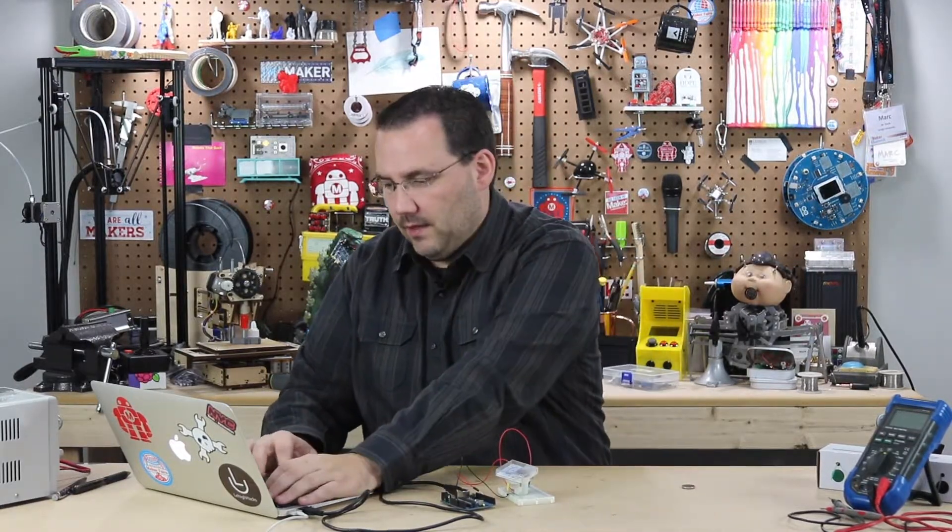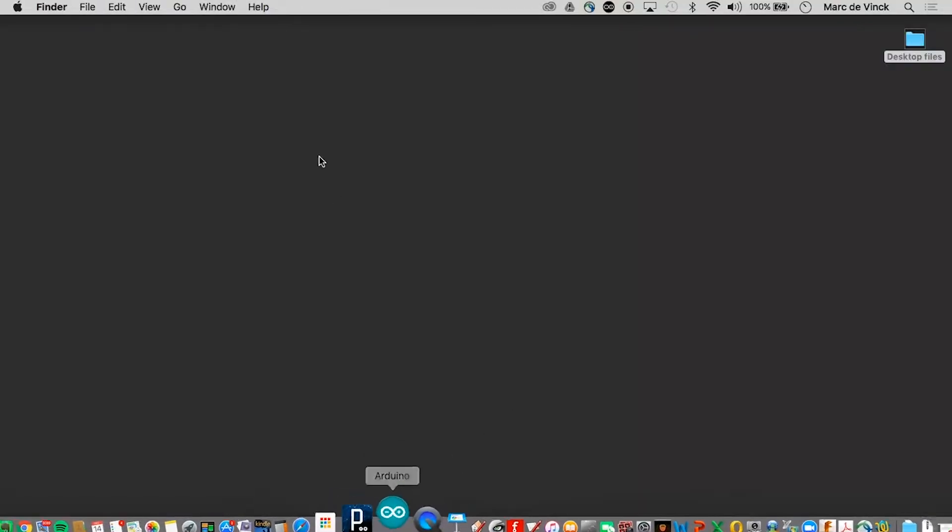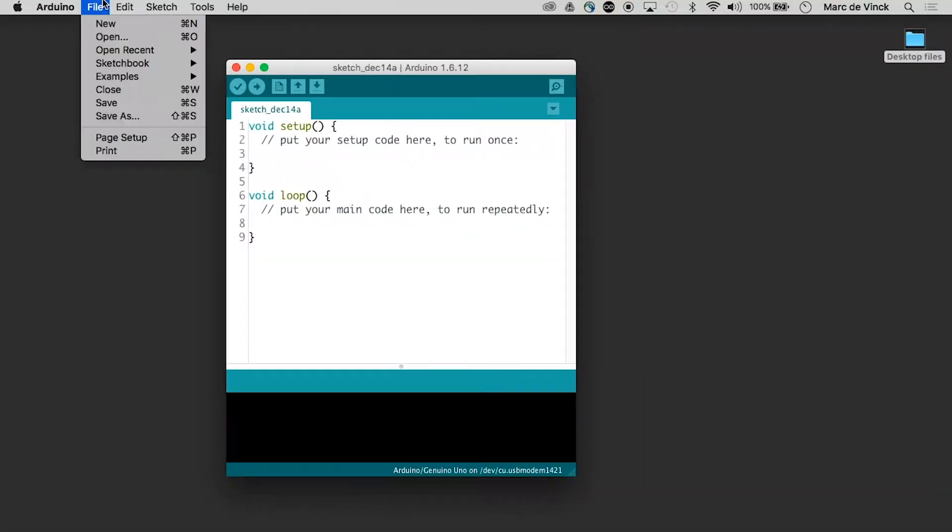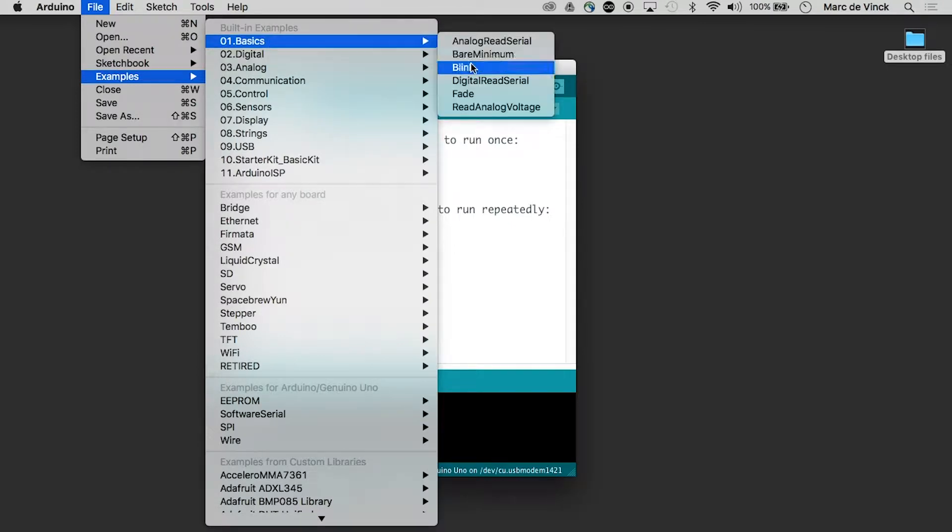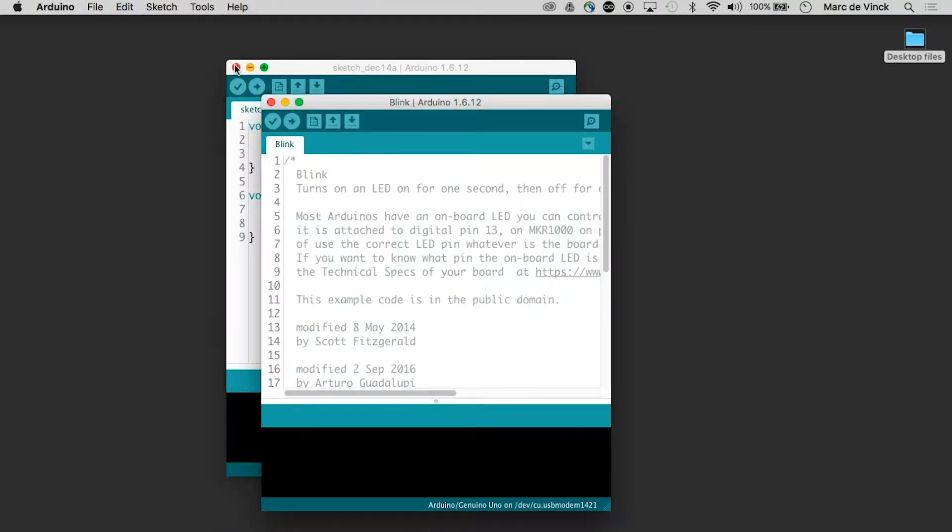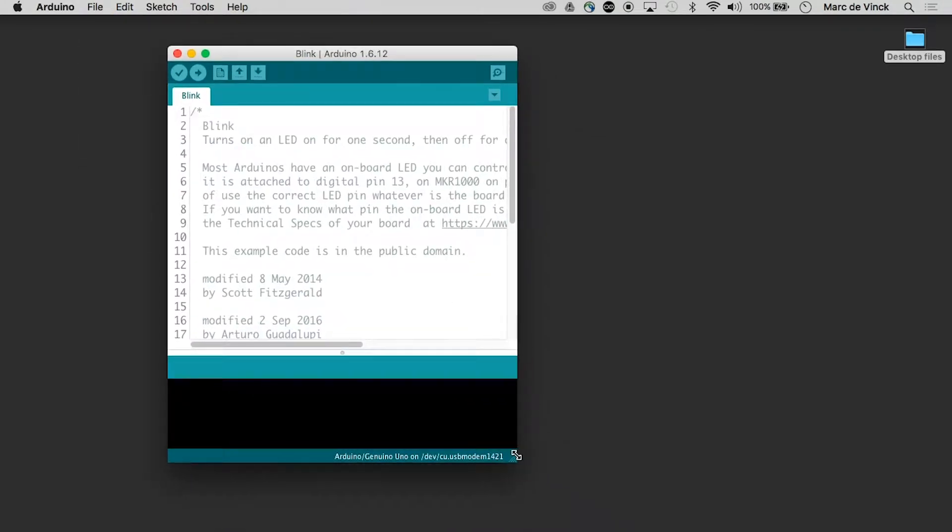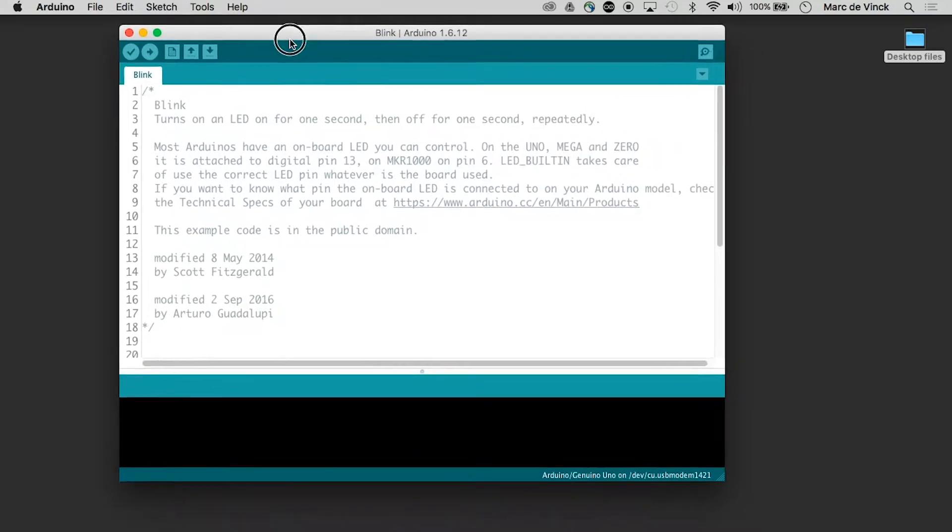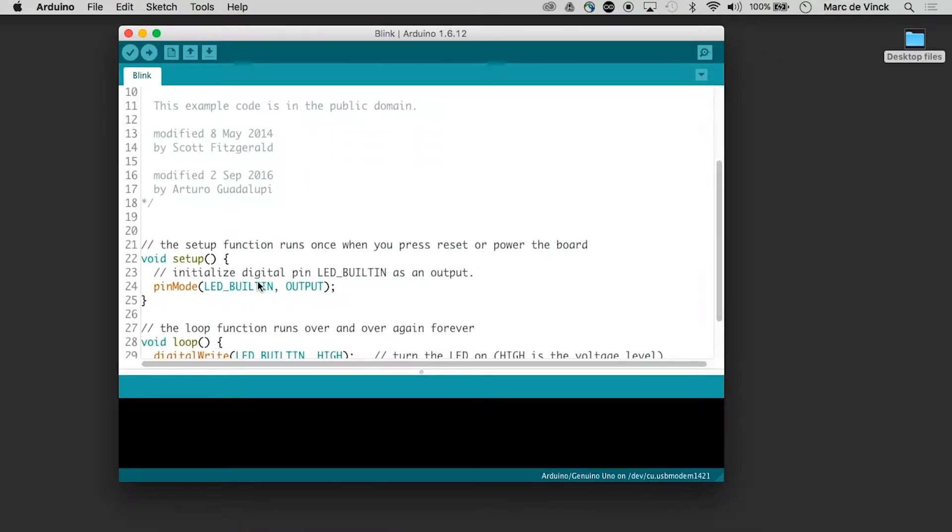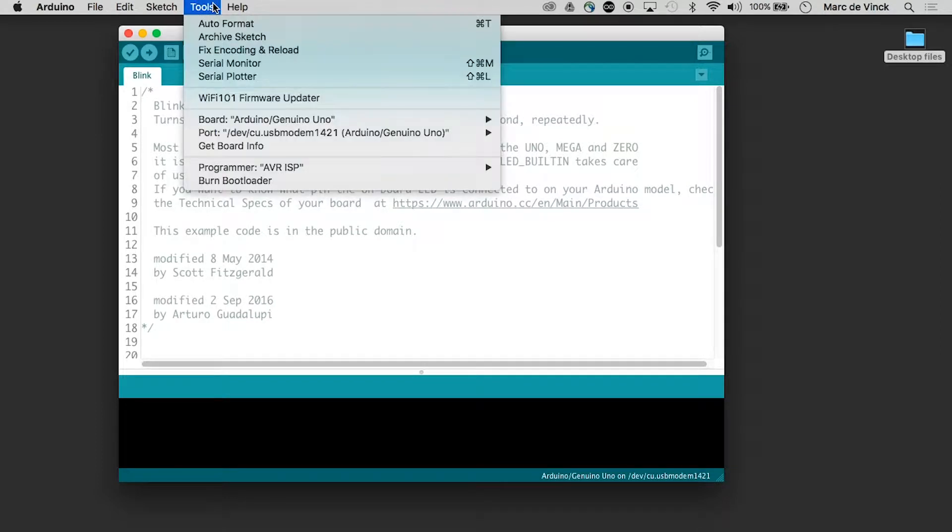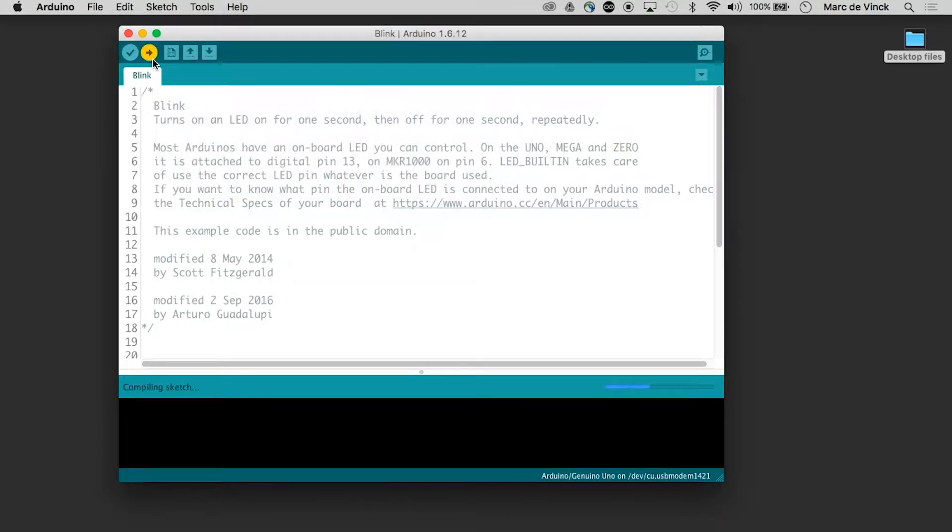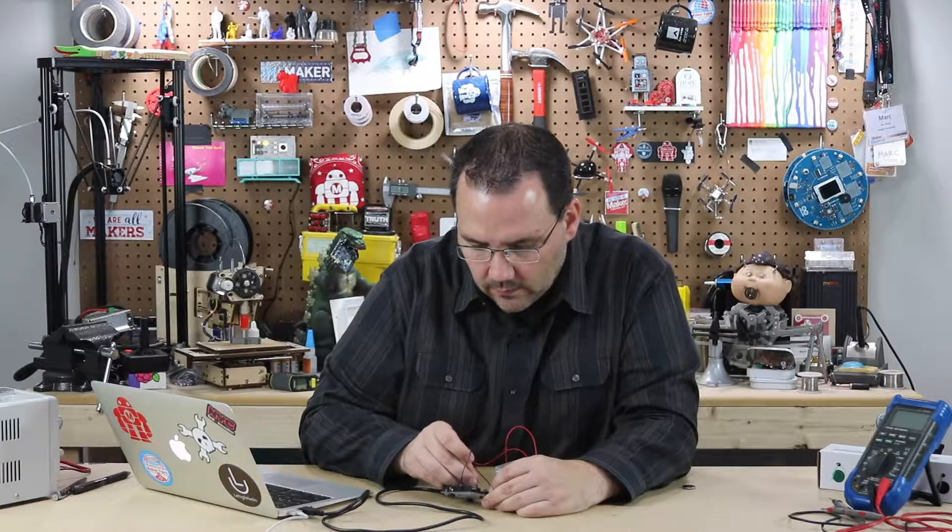Let's start by opening up the Arduino IDE, and we'll go to File, Examples, Basic, Blink, which we know is connected to the LED built-in, which is pin 13. My Arduino is hooked up. Let's upload this and put it into 13.